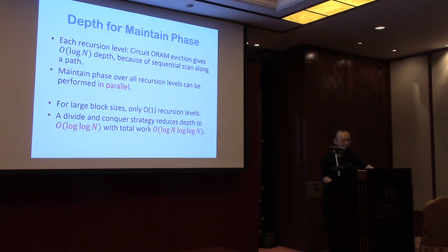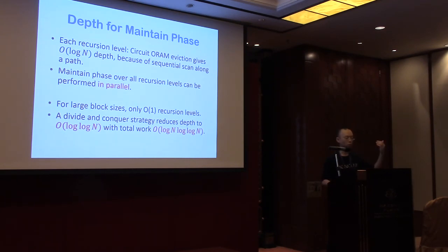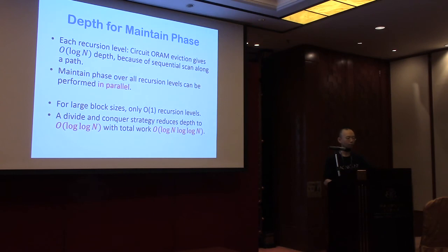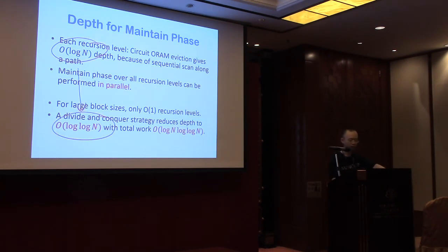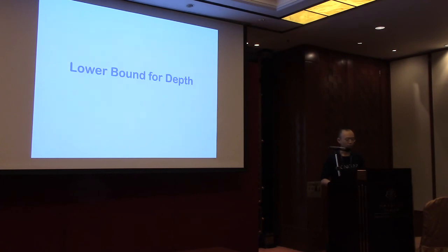The second idea is for the maintain phase. If you're familiar with Path ORAM or Circuit ORAM, the maintain phase needs to deal with a linear scan on a path of length log-N, which naively takes log-N depth. Here, we use a divide-and-conquer approach so that we can reduce the depth from log-N, but we have to increase the total work blowup slightly. That is the cost of achieving smaller depth.